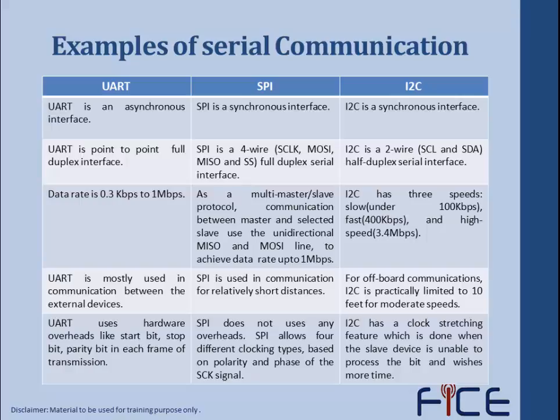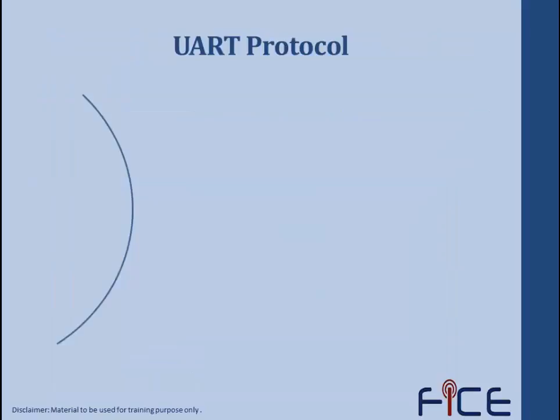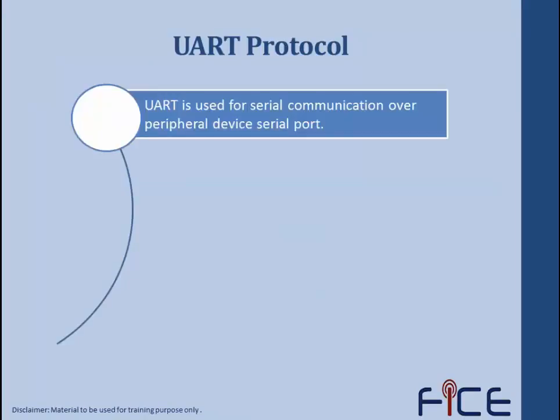UART uses hardware overheads like start bit, stop bit, and parity bit in each frame of transmission. SPI does not require such overheads, but uses four different clock types based on polarity and phase of the clock signal. I2C has a unique feature called clock stretching, which is used when the slave device is unable to process the bit and requires more time for communication.